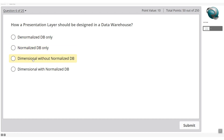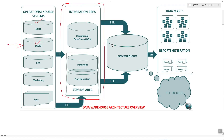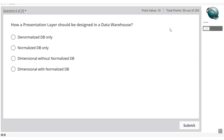How should a presentation layer be designed? Options are: denormalized database, normalized database, or dimensional without normalized DB. The presentation layer uses a star schema structure — all dimensional tables without a normalized database. The answer is 'dimensional without normalized DB,' where DB stands for database.